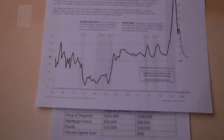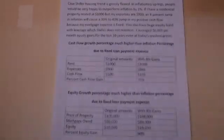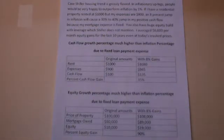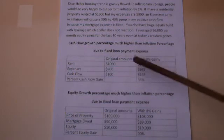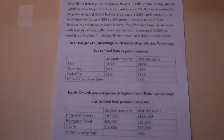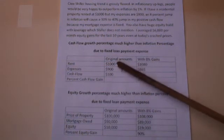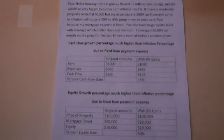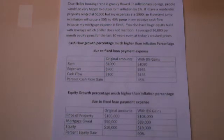I believe that this is grossly flawed, and we'll see here the reason why. Here I have just some sample numbers, where you buy a property with a fixed loan. Let's just suppose you have the property rented for $1,000, and your expenses are $900 a month, and that leaves you $100 of positive cash flow.